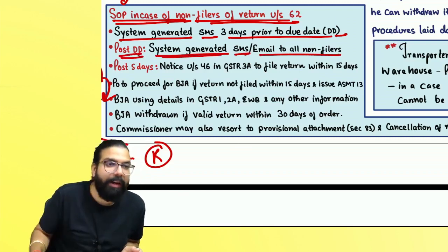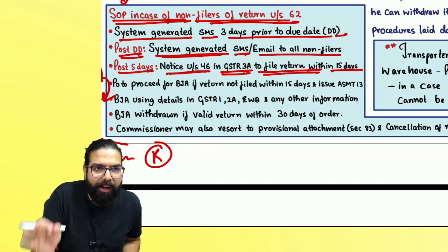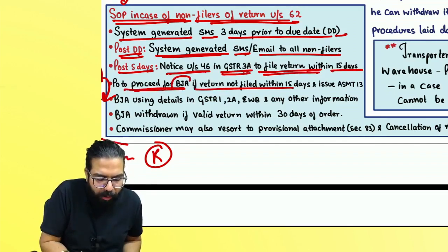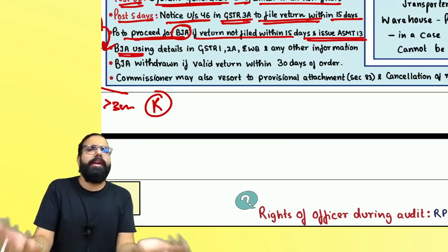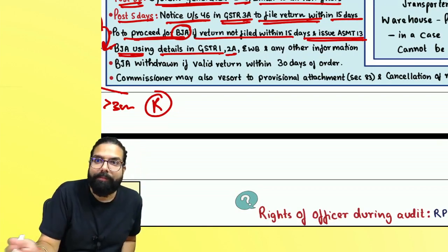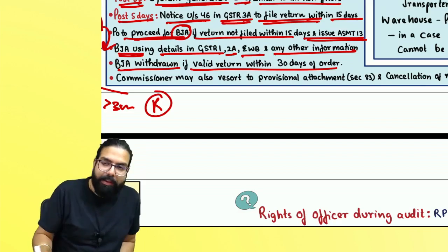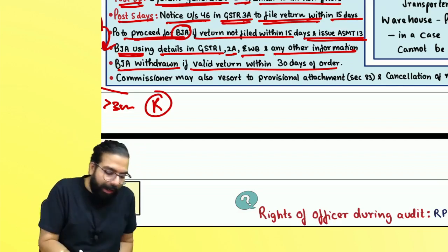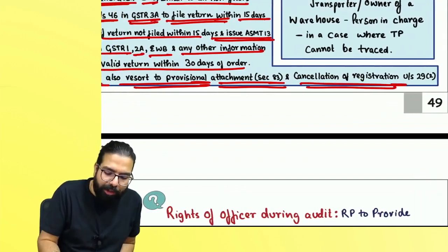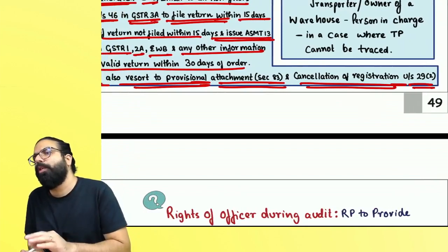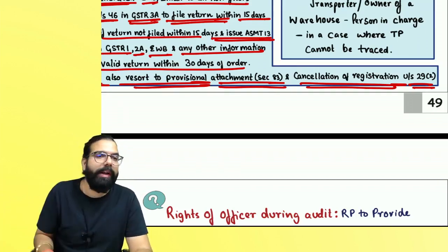Post due date, a system-generated SMS or email will be sent only to non-filers. After five more days, one notice will be sent in GSTR-3A to file the return within 15 days. If they don't file, the proper officer will proceed for best judgment assessment and issue the assessment order. While doing the best judgment assessment, the officer will use other details available like GSTR-1, GSTR-2A, 2B, email, and any other information. The best judgment assessment will be withdrawn if you file a valid return within 30 days. The Commissioner can also resort to provisional attachment of property, and also proceed for cancellation of registration under section 29(2).